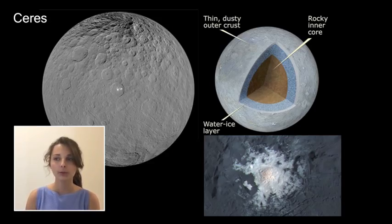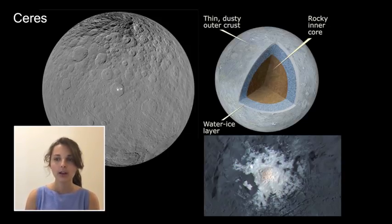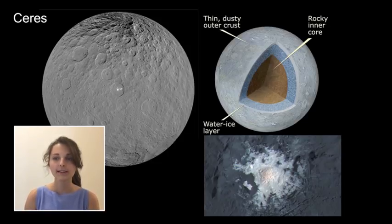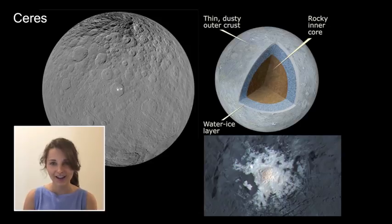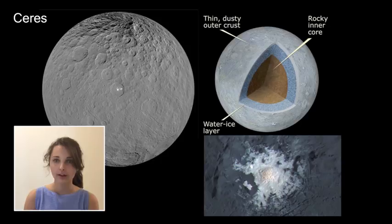Ceres is the only dwarf planet in the inner Solar System and is also technically an asteroid because it is found in the asteroid belt. Its internal structure is suspected to consist of a fresh water ice mantle surrounding an inner rocky core. Its surface composition is similar to C-type asteroids, with the presence of graphite, sulfur, and sulfur dioxide indicated by spectral tests, and its atmosphere is composed mostly of water vapor. The bright spots on the surface of Ceres, known as faculae, are composed of highly reflective salt, which may be indicative of hydrogeologic activity. Ceres was studied primarily by the Dawn spacecraft in 2015.